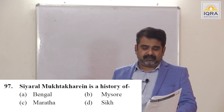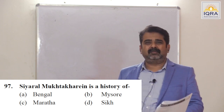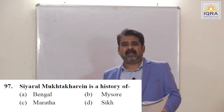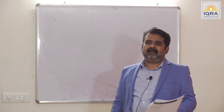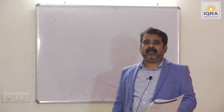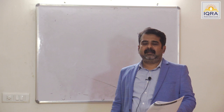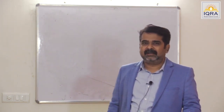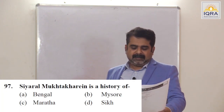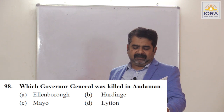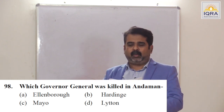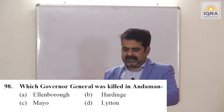Siyarul Mukhtatarin is the history of Bengal — author is Ghulam Hussain. He neglects the story of the Black Hole tragedy; it is not mentioned in his book. Answer is A. Which Governor General was killed in Andaman? Mayo. Answer is C.